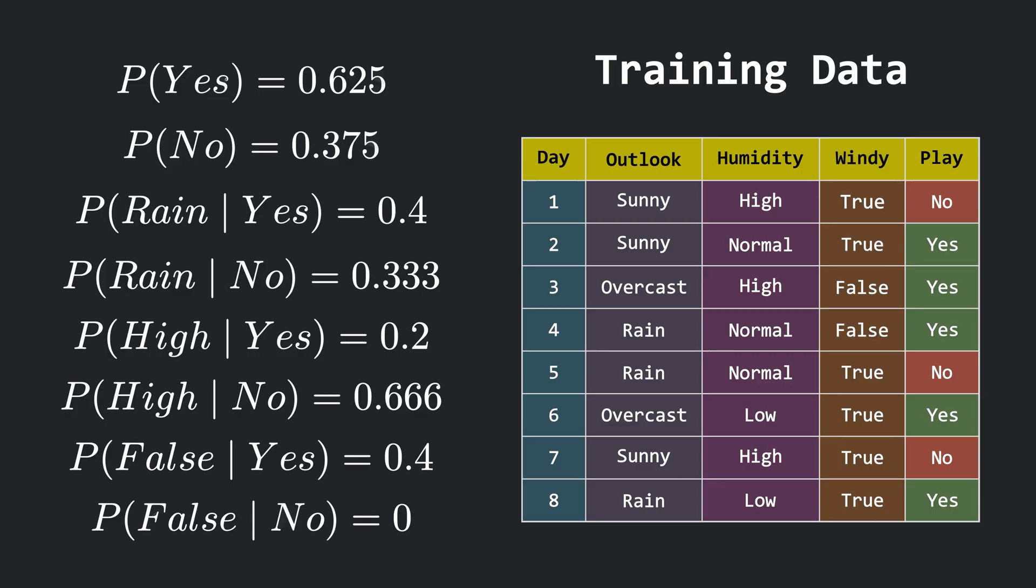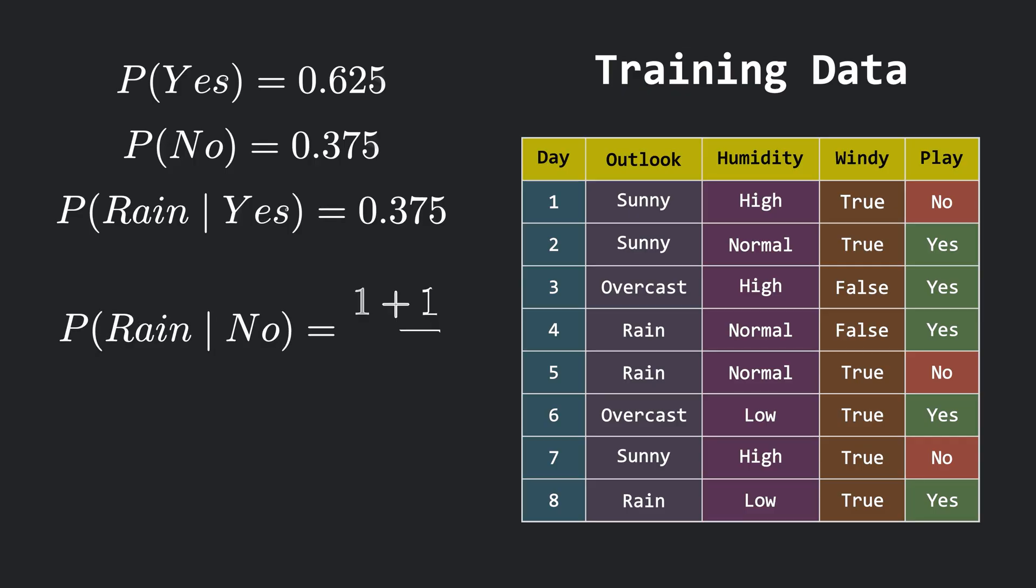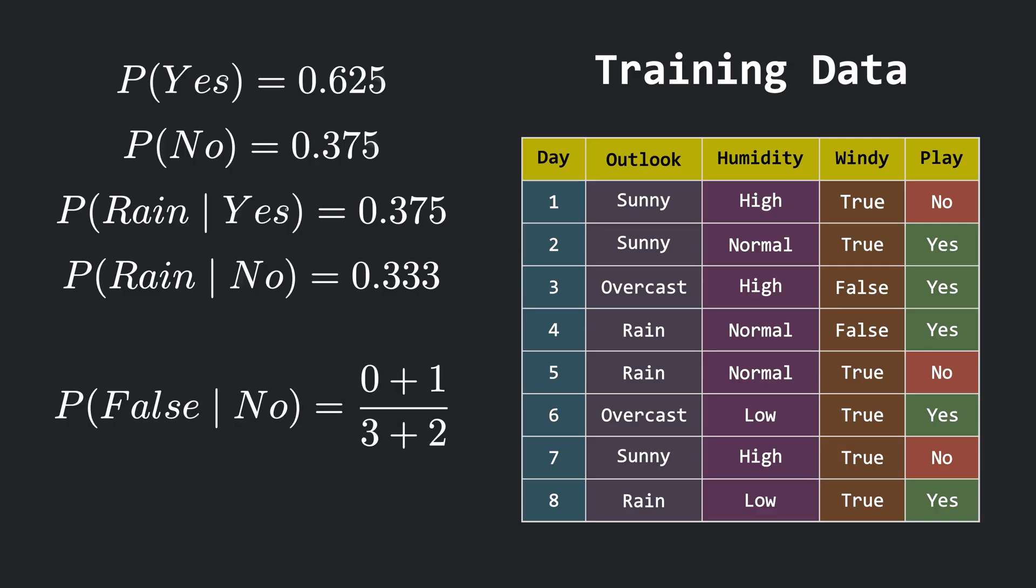Now let's update these values using Laplacian smoothing. Here we will not be updating the values of outputs because they are not collapsing to 0, although it can be done here as well. But let's leave it. Now the probability of rain given yes looks something like this, where we add 1 in the numerator and 3 in the denominator, because rain belongs to the feature outlook which can take 3 values. So the new term will be this. Simple, right? Next, the probability of rain given no can similarly be found. Now the probability of false given no will be like this, where we add 1 in the numerator and 2 in the denominator. Now this will not collapse to 0, and that's exactly why we use Laplacian smoothing. I hope this is clear by now.